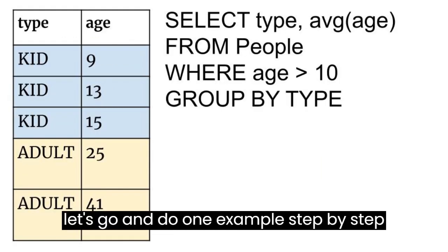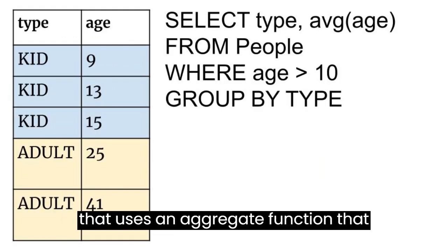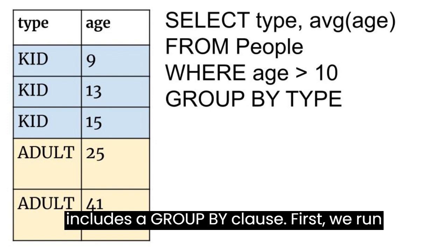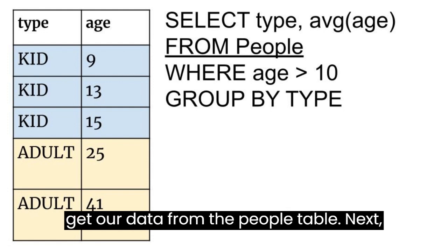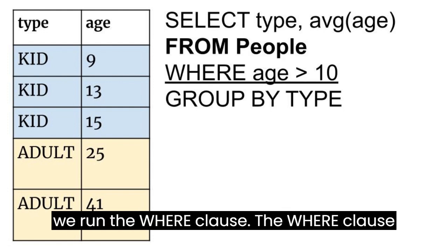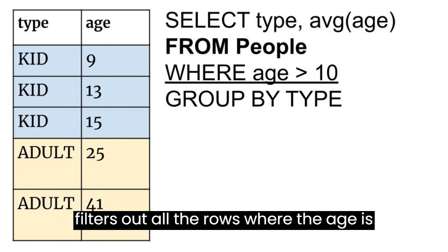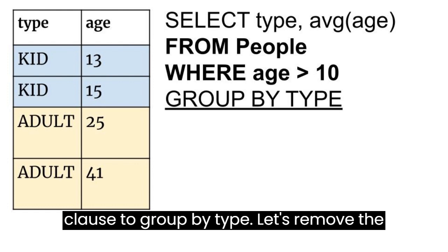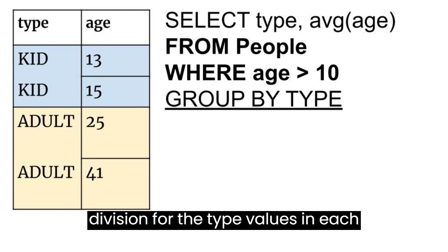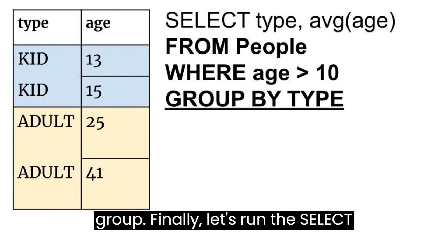Okay, let's go and do one example step-by-step that uses an aggregate function that includes a group by clause. First, we run the from clause. This just tells us to get our data from the people table. Next, we run the where clause. The where clause filters out all the rows where the age is less than 10. We can use the group by clause to group by type. Let's remove the division for the type values in each group.